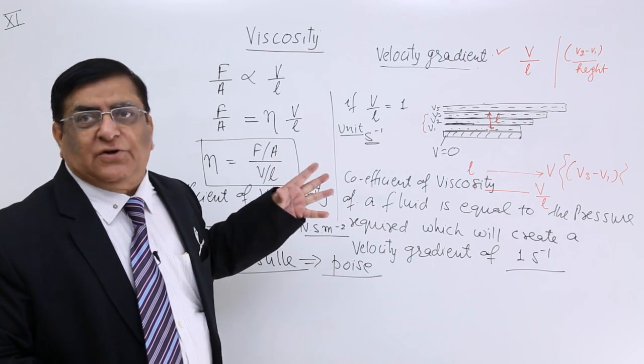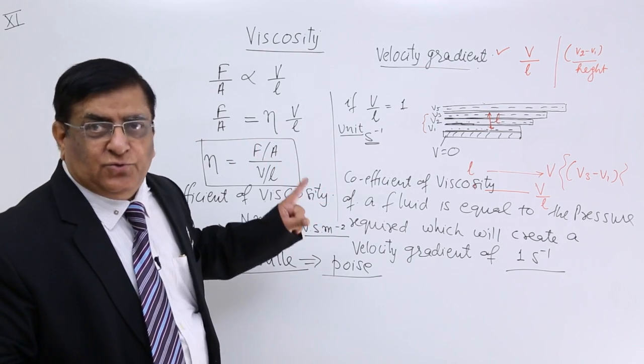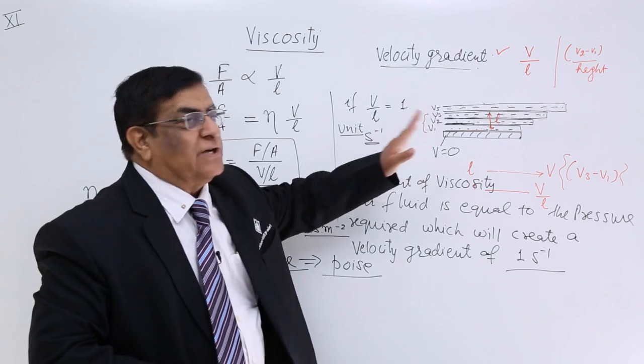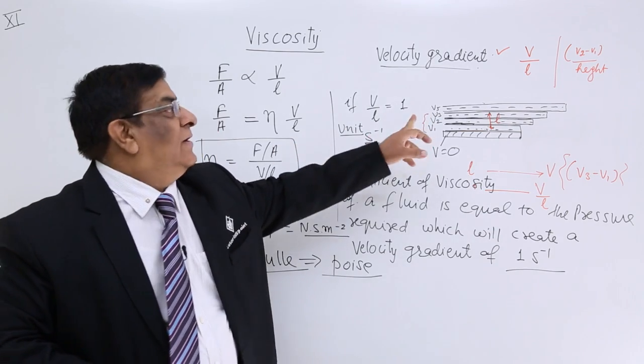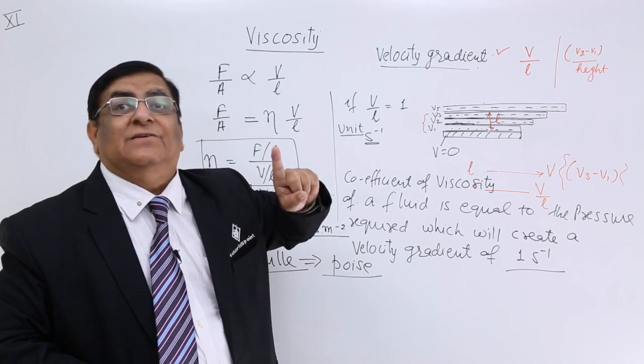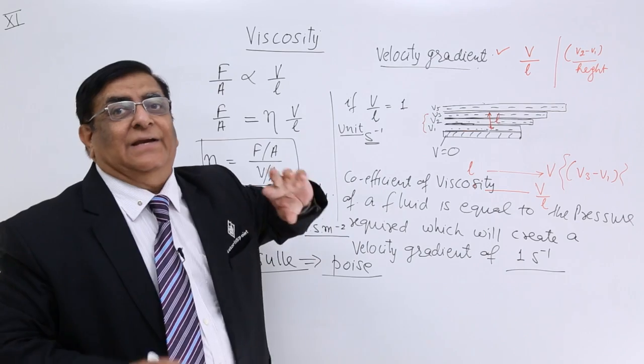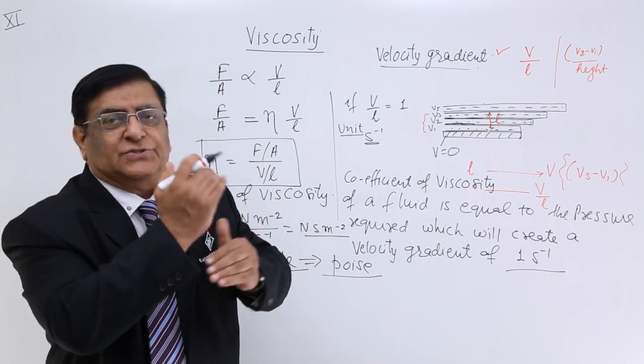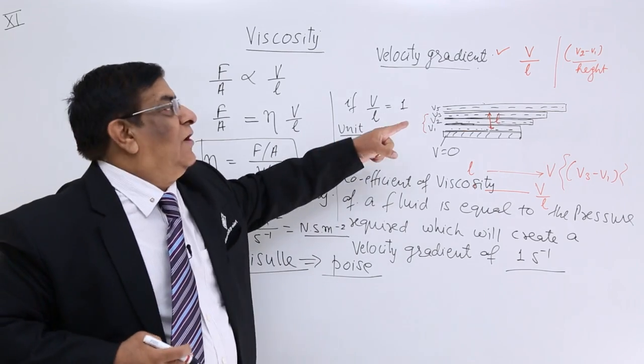What happens due to viscosity? Due to viscosity, the velocity gradient is decided. And it is opposite, reverse to, inverse to velocity gradient.